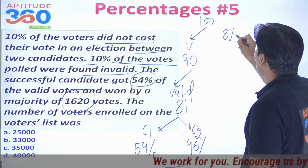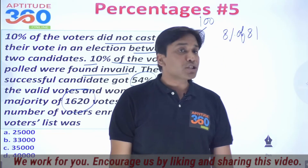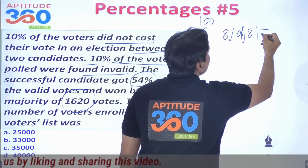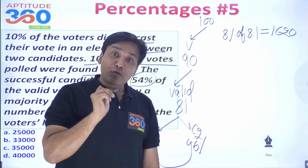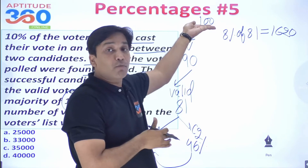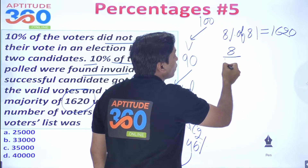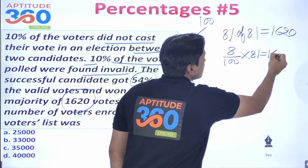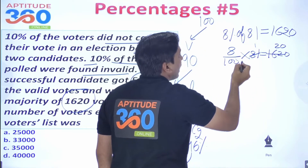8% of 81 = (8/100) × 81, and this equals 1,620 as given. Simplifying: this gives 1 unit = (100/8) × (81/1620). Reducing: 1620/81 = 20, so 1 unit = 100/8 × (1/20) = 100/160.